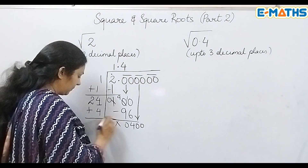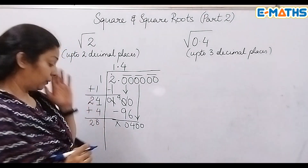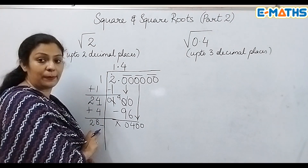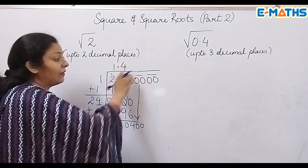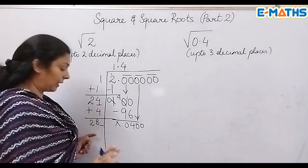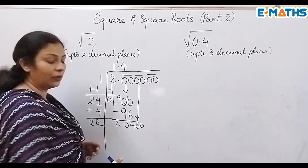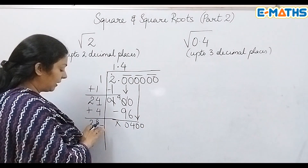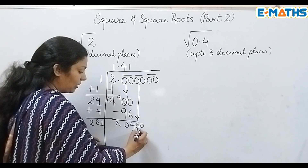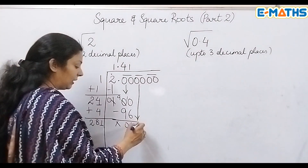I bring down the second pair and add the 4, giving me 28 on the left side. The ones place is still to be determined. If I take a 0 it will give me 0, which I don't want since 400 is a workable number. If I take a 1 it will be 281×1. If I take a 2 it will be more than 400, which is not possible, so I'll take 1 only.